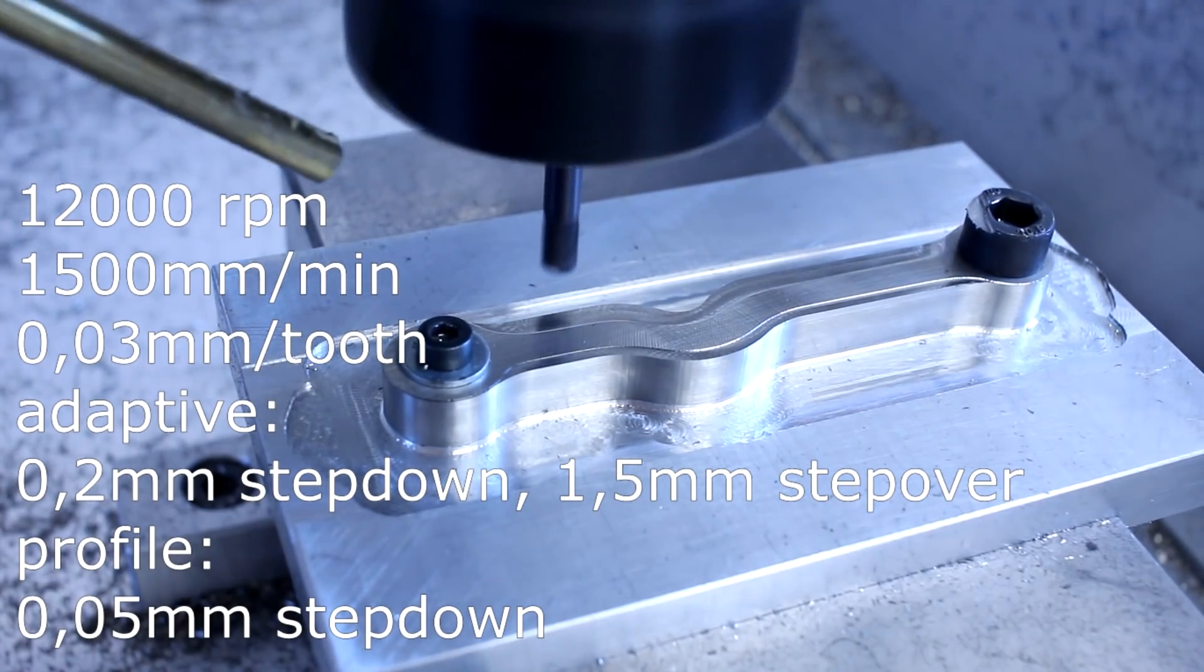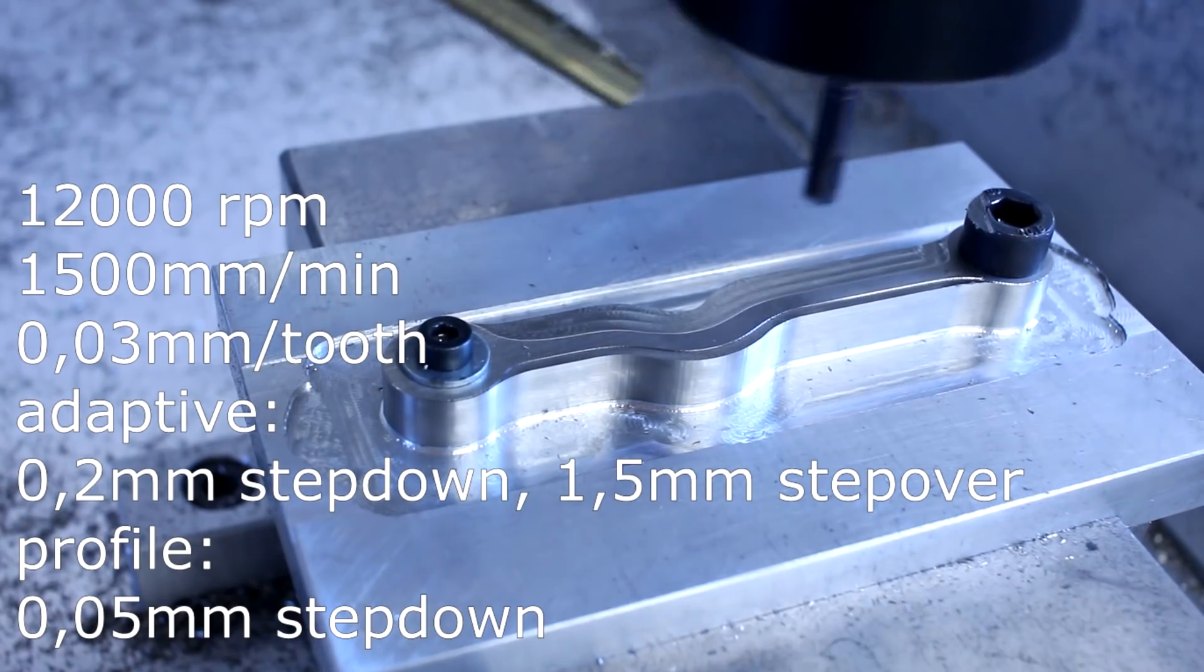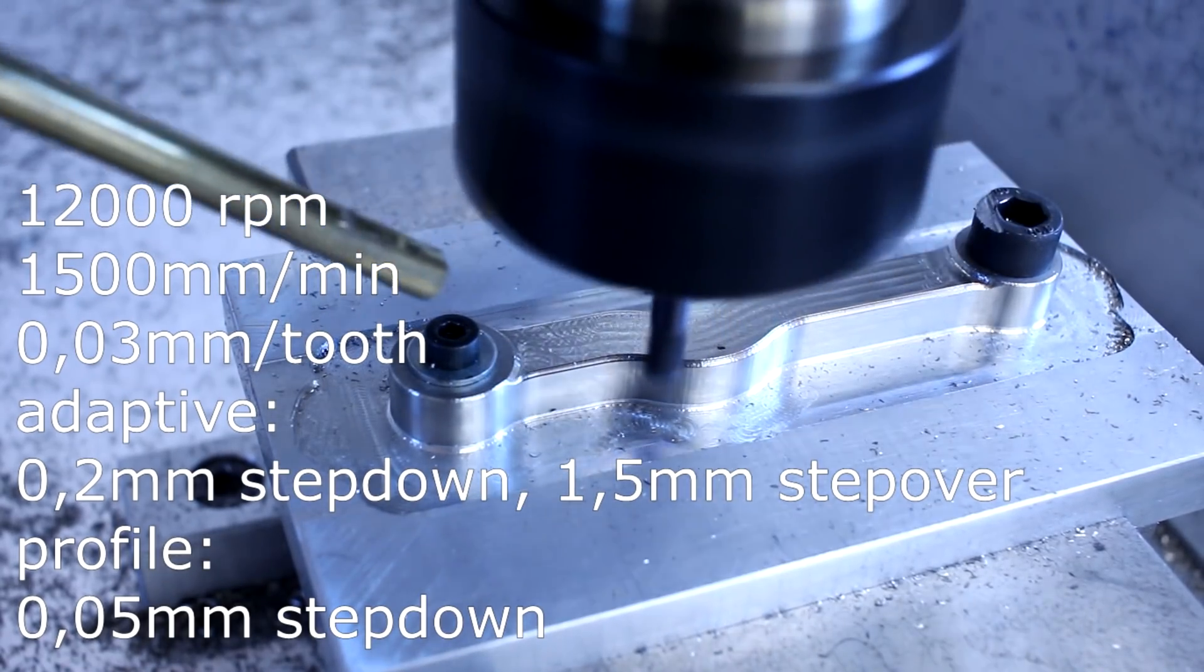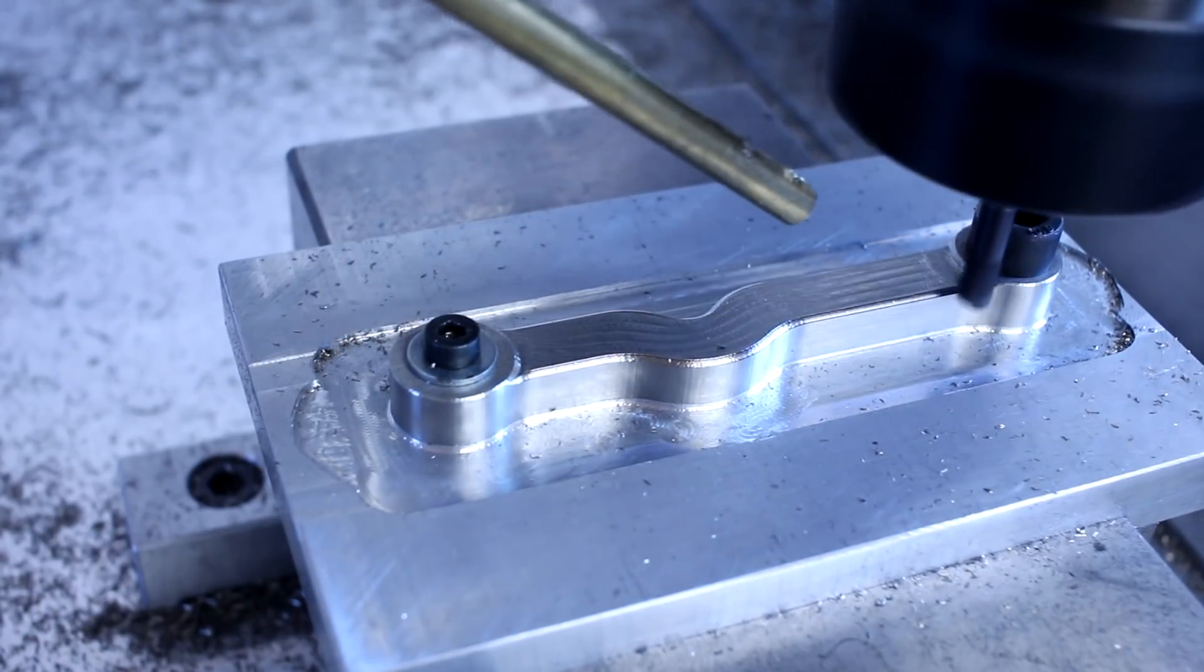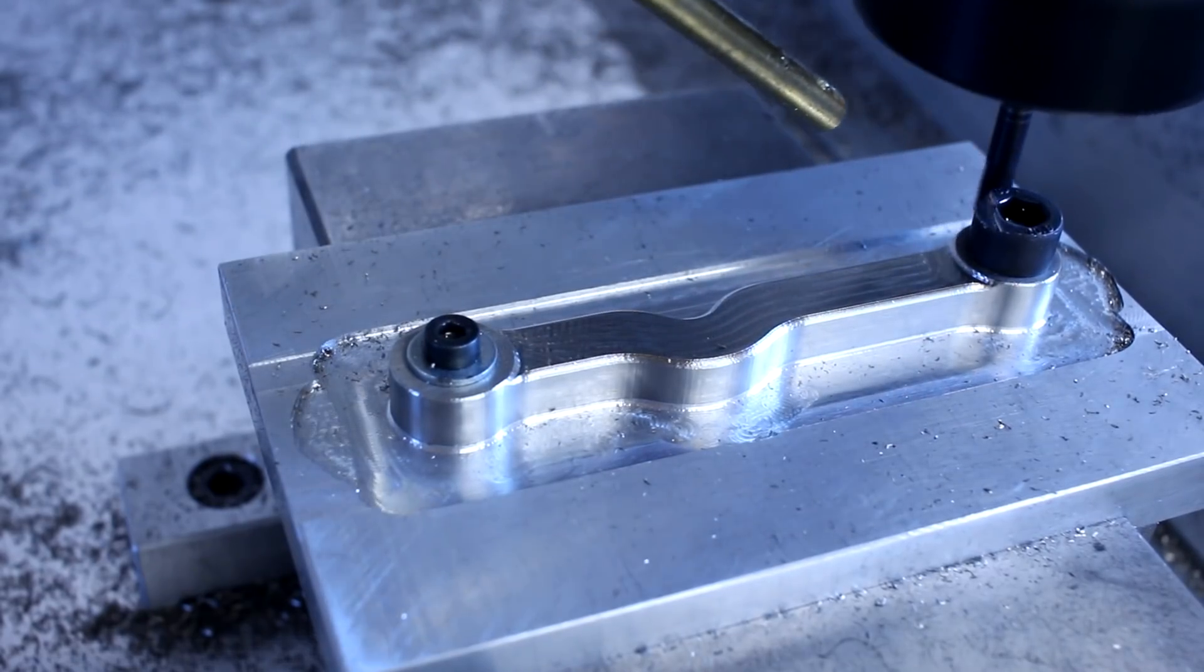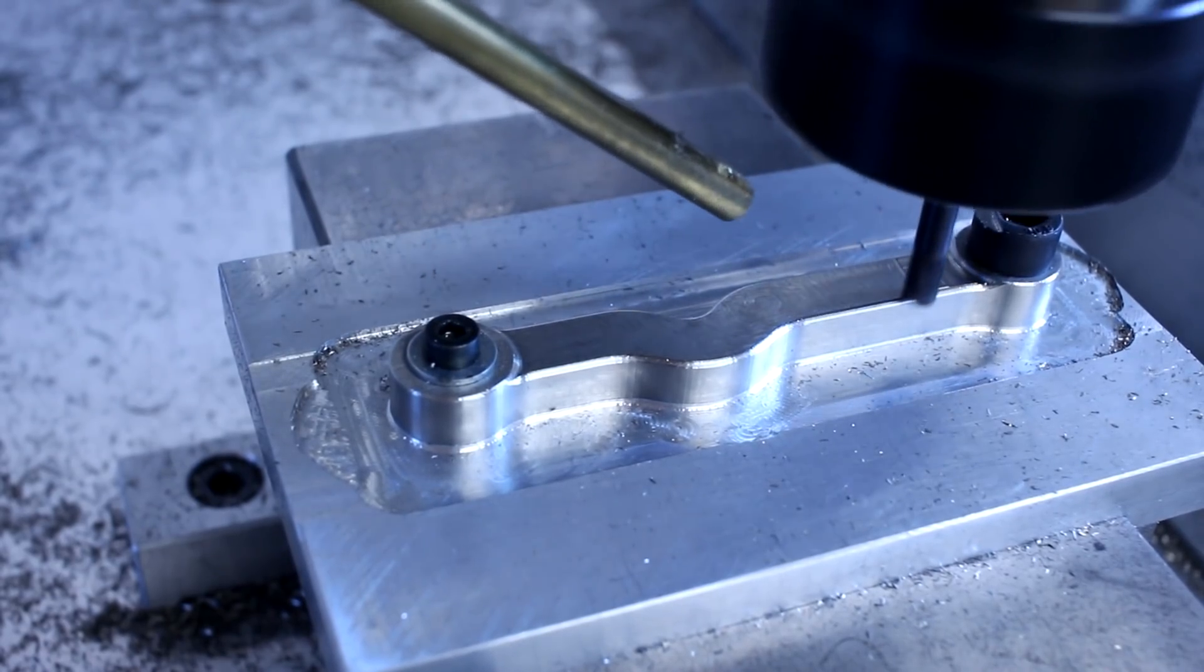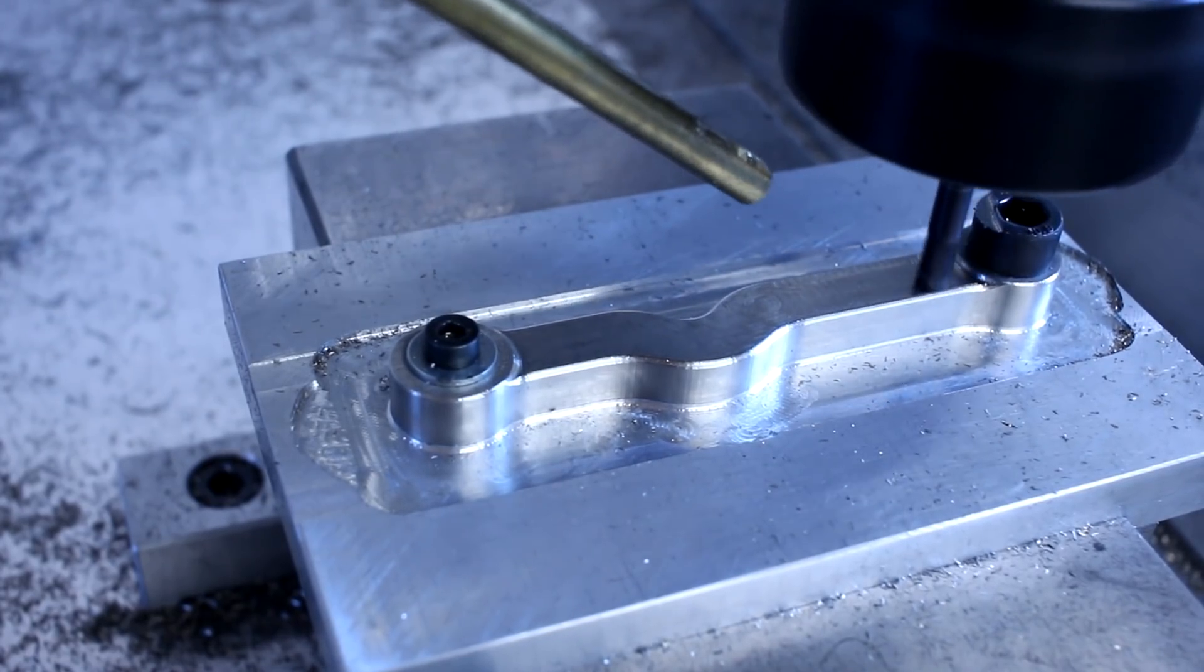First I'm using an adaptive clearing strategy to neck down the section between those two bosses. Then I'm using a profile strategy which just follows the shape of the 3D model and creates the side profile, in this case the radius. The last operation is a flatlands operation which just finishes the area between those two bosses to the final sea height.